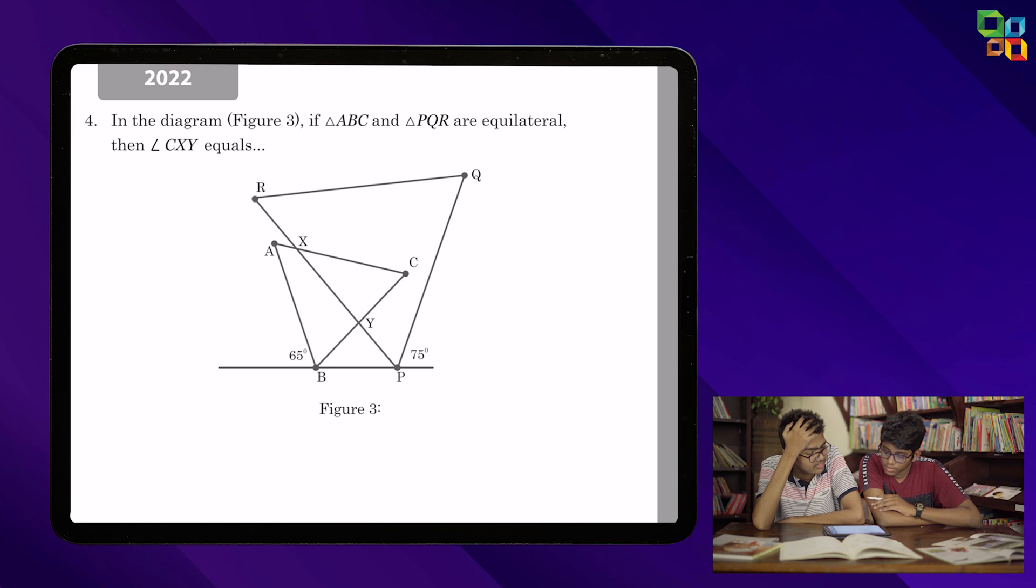So in this question it's saying that in the diagram ABC and PQR are equilateral triangles. So that implies that all the angles in the triangles are 60 degrees and the sides are equal, and they're asking us to find angle CXY. CXY is this angle.